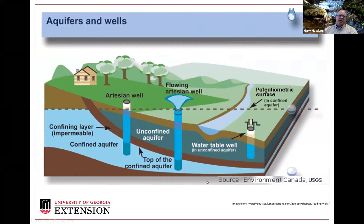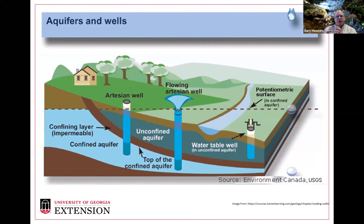An aquifer is simply an underground area where water is contained, filling up the pore spaces. Think about a handful of sand — those sand particles touch each other but don't form a completely cohesive group, so there are spaces between them. Below the water table, or what we call the piezometric surface, all those spaces between the sand or clay particles are full of water. That becomes what we call the piezometric surface or the water table.